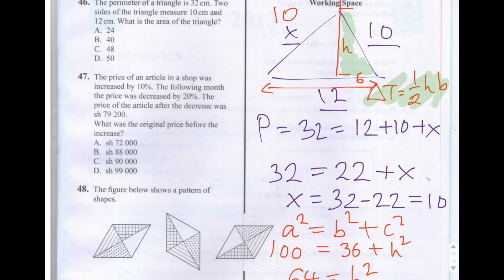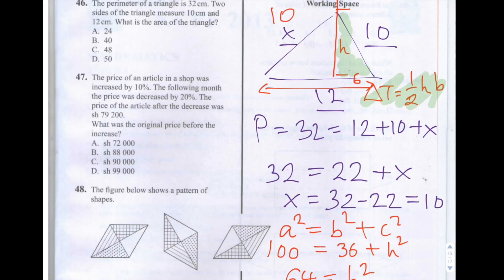Times by a half, the same as dividing by 2, is 48. So the area of the triangle is 48. So the answer is C, 48.